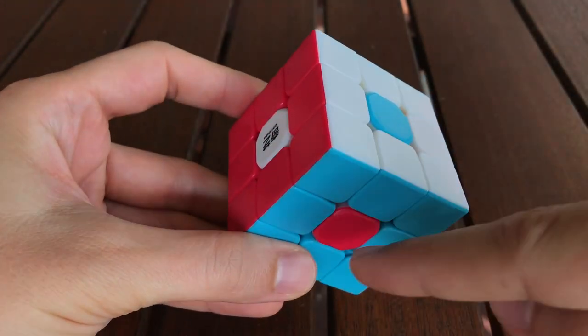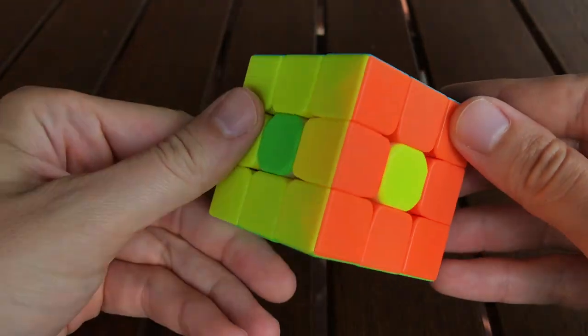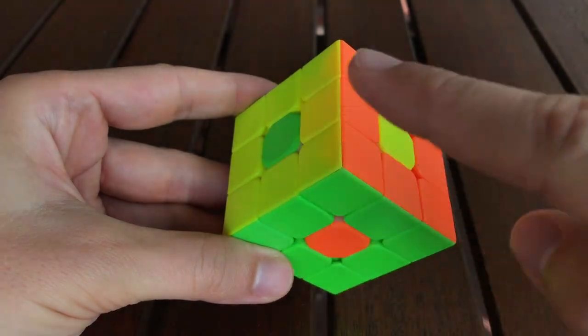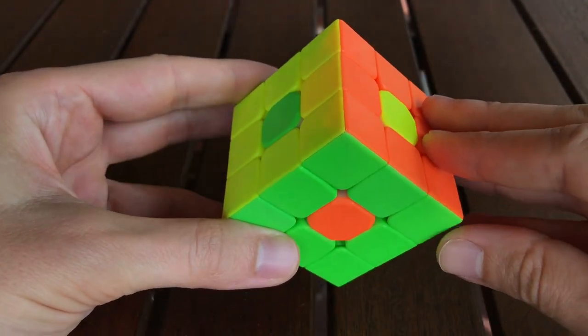You'll notice that although the red, white, and blue pieces have cycled in a counterclockwise direction, the orange, green, and yellow pieces cycled in a clockwise direction.